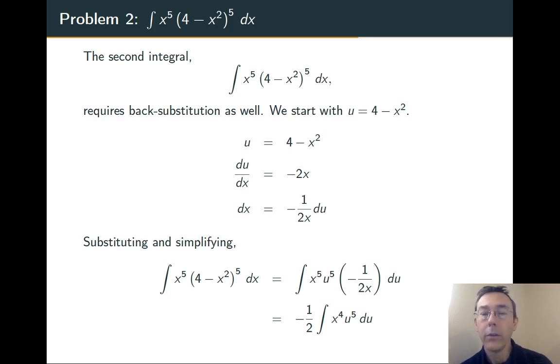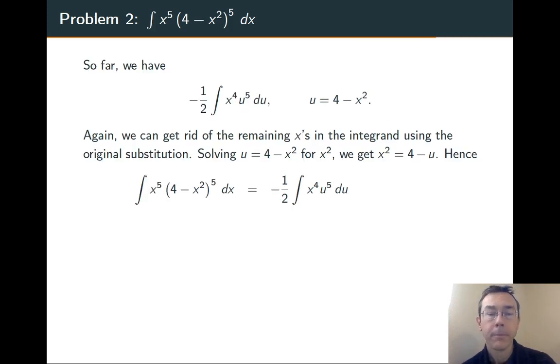Can we use the original substitution, u equals 4 minus x squared, to do that? The answer is yes, of course. I'm just going to move the x squared over to the other side and then bring the u over, basically solving it for x squared, because x to the 4th is x squared squared.